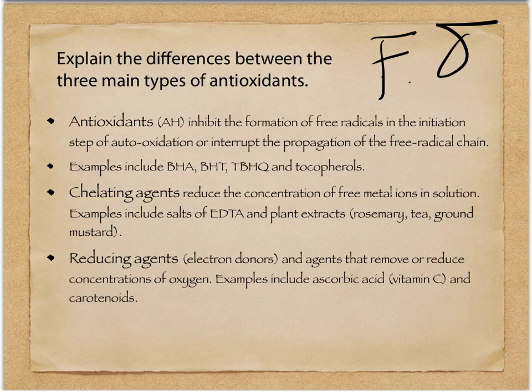So we have antioxidants — what do they do first? Remembering back to the standard level content, antioxidants inhibit the formation of free radicals. In the last content area on oxidative rancidity, we looked at the formation of free radicals and how those free radicals could form hydroperoxides in the initiation step. What antioxidants do is they inhibit or disrupt that initiation step.